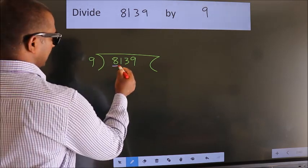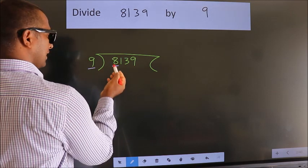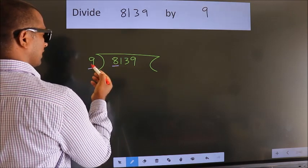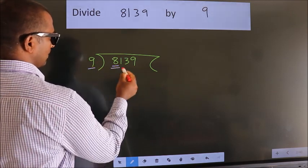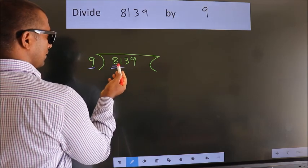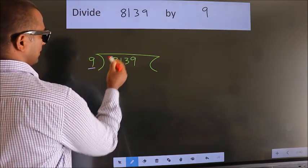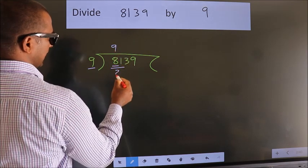Here we have 8, here 9. 8 is smaller than 9, so we should take two numbers: 81. When do we get 81 in the 9 table? 9 nines, 81.